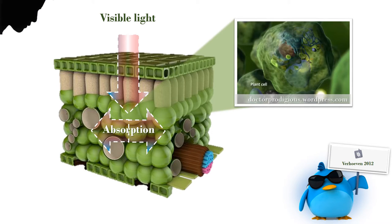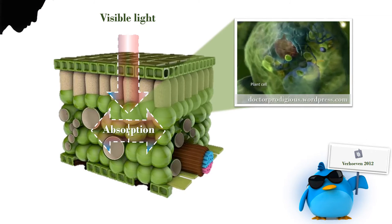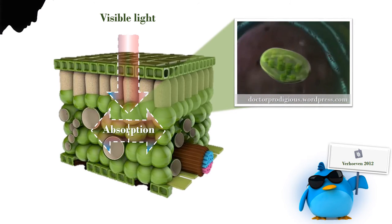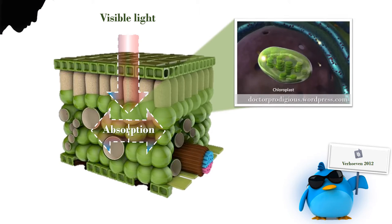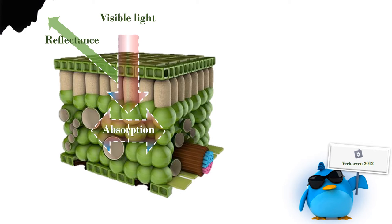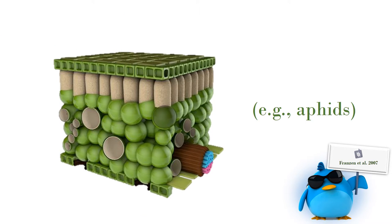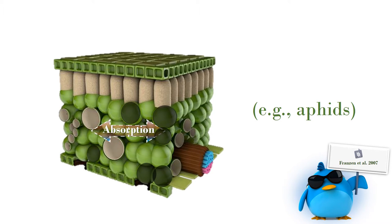Visible light is absorbed inside the plant's cells by chloroplasts. A healthy plant typically absorbs about 90% of the radiant flux of visible wavelengths. The remaining 10% is mostly reflected in the absence of stress, but it can also be transmitted through the lower surface of the leaf. Feeding of sucking insects, such as aphids, typically decreases the absorption of visible light.